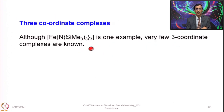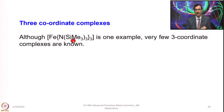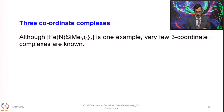3-coordinate complexes are less common. One very important example is the hexamethyldisilyl amide complex — because of the bulkiness of this amide ligand, it stabilizes iron with coordination number 3. This complex can be prepared starting from anhydrous FeCl3 and its treatment with the lithium salt of hexamethyldisilyl amide. So this is one example where a 3-coordinate complex can be seen.